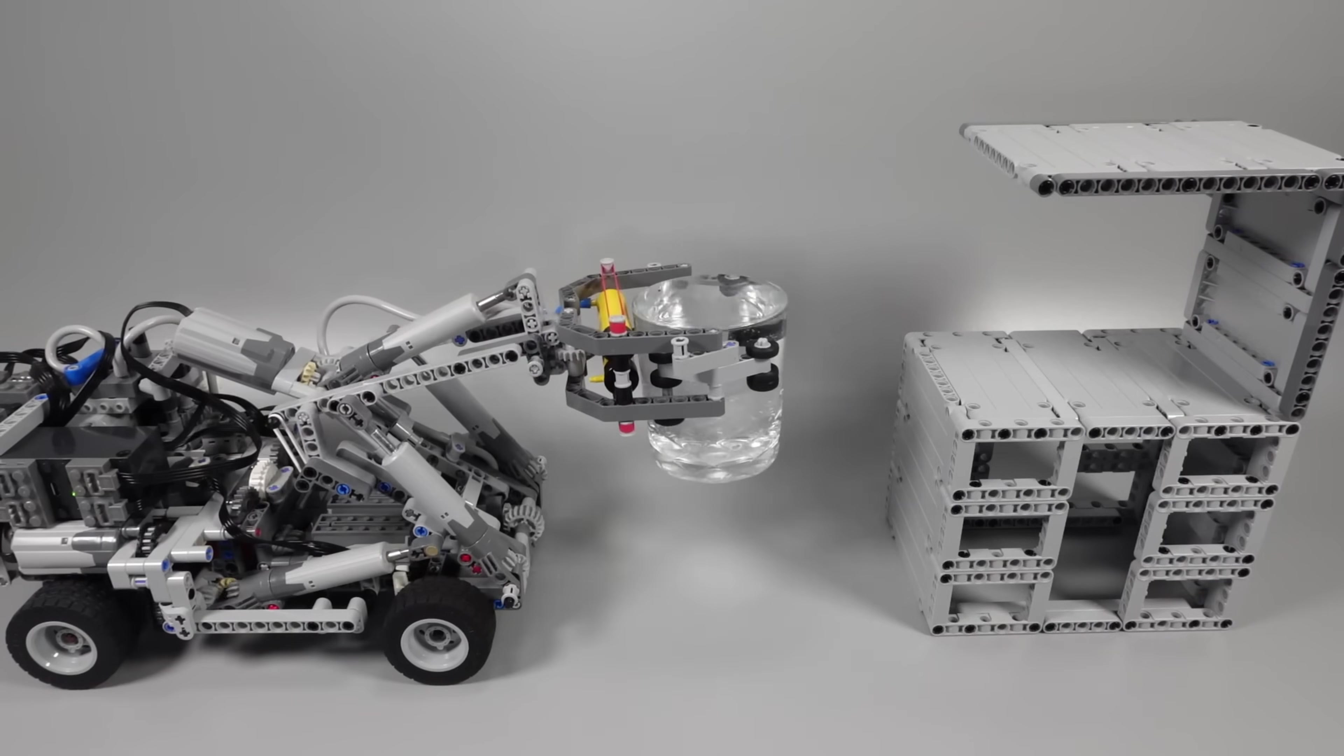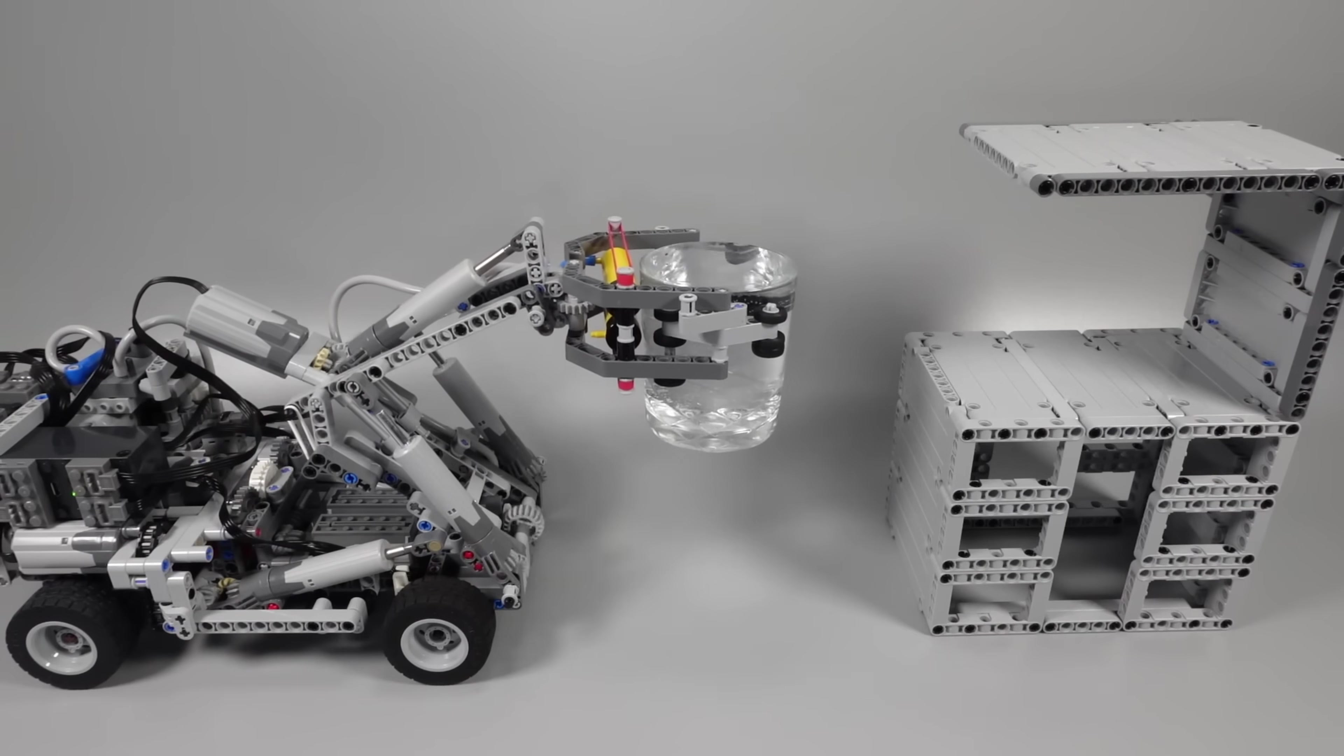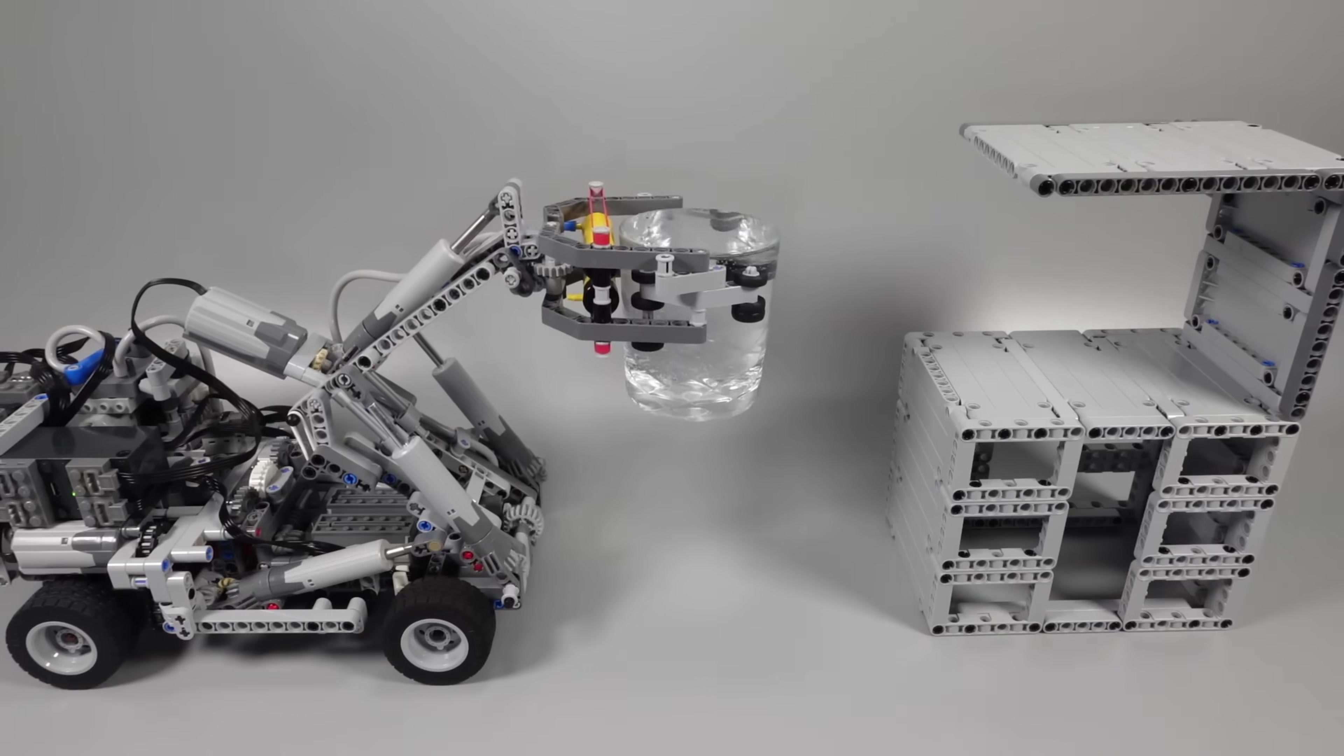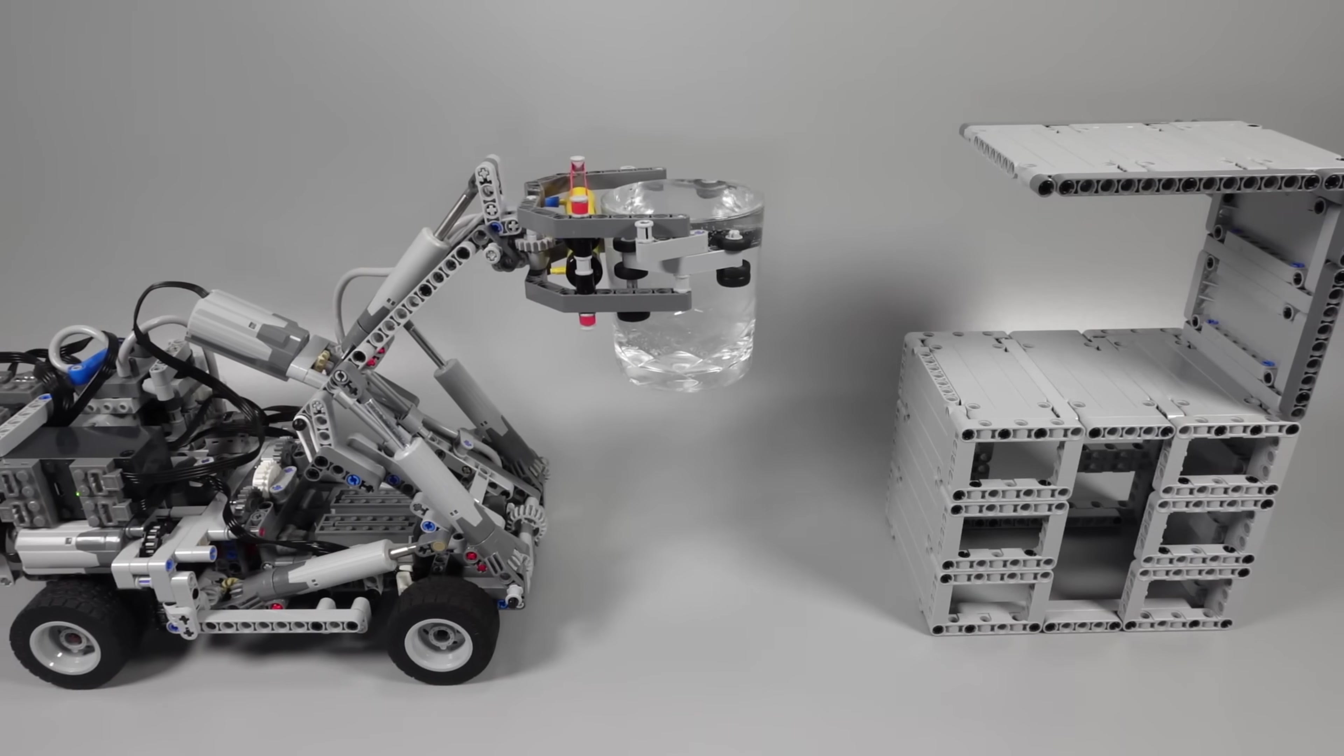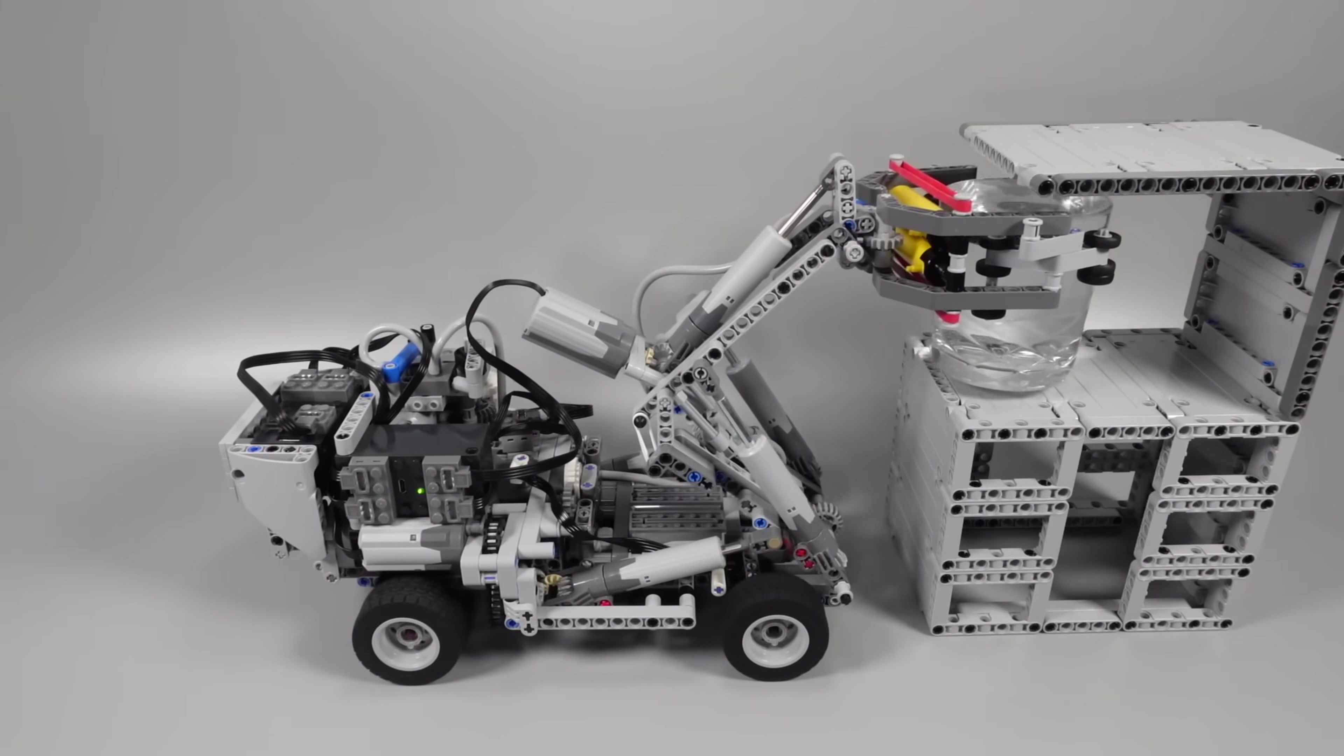This is a Lego robot. It lifts a glass full of water and carries it. It has many electric motors. Where does its energy come from? The energy source is electricity. I lift the glass of water. This requires energy.